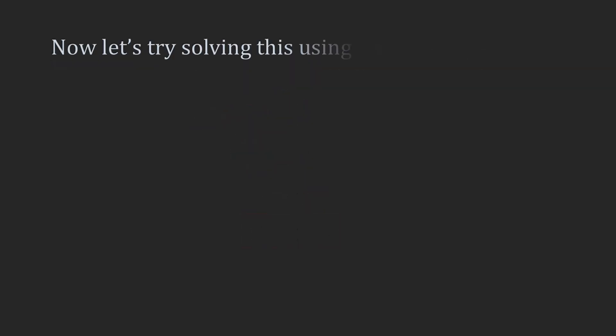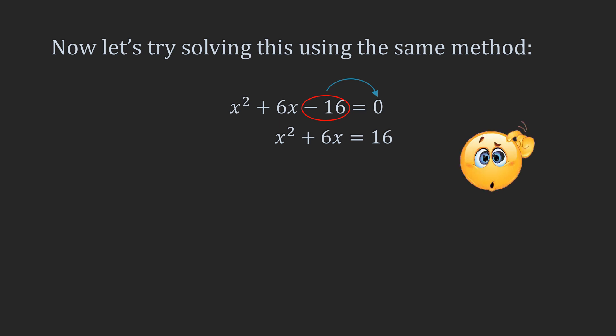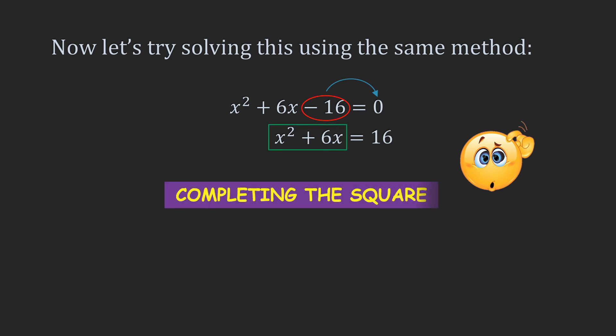Let us now take another example and try solving it using the same method. We have x squared plus 6x minus 16 is equal to 0. First, we will transpose the constant term to the right hand side to get x squared plus 6x is equal to 16. But we get stuck here, because the term on the left hand side, that is x squared plus 6x, is not a perfect square. So here comes the concept of completing the square — we need to form a perfect square on the left hand side of this equation.